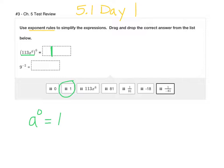The other question here has a negative exponent. And our negative exponent rule is also in 5.1, day one. And it tells us that a to the negative m power is equal to one over a to the m power.